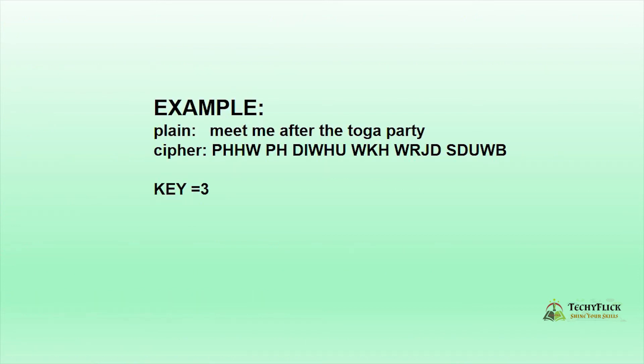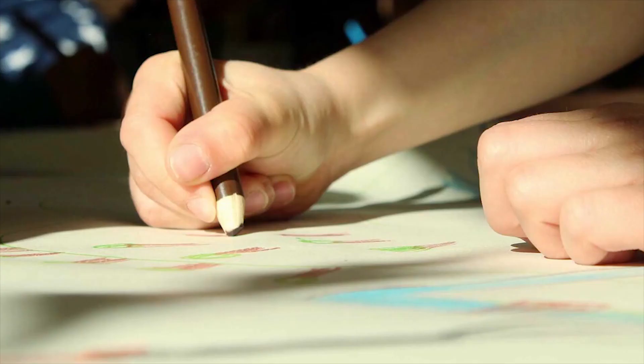This is the example from the book. Plain text is 'meet me after the toga party.' This is the example we have. I will explain the answer. If you have any doubts, leave your comments in the comment section. Thank you.